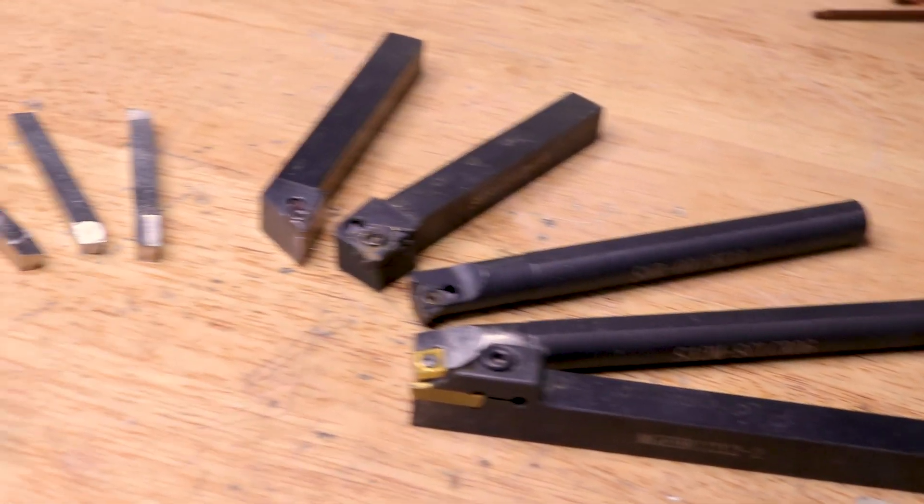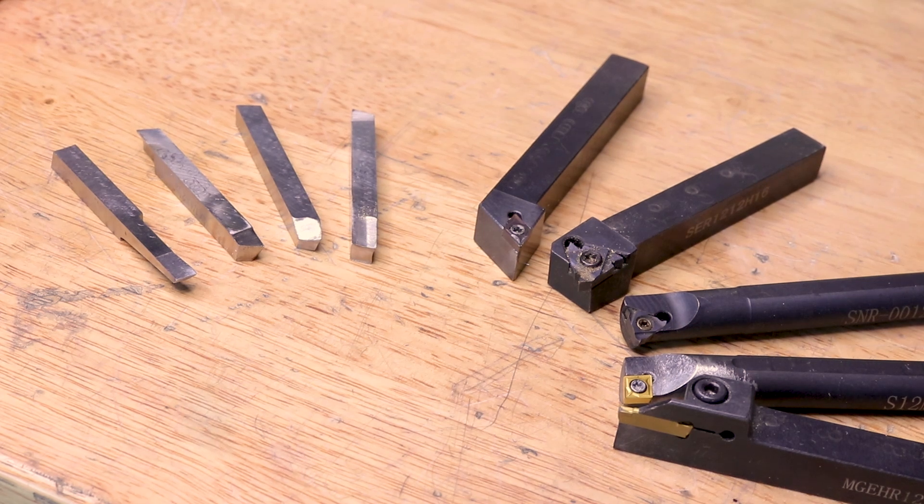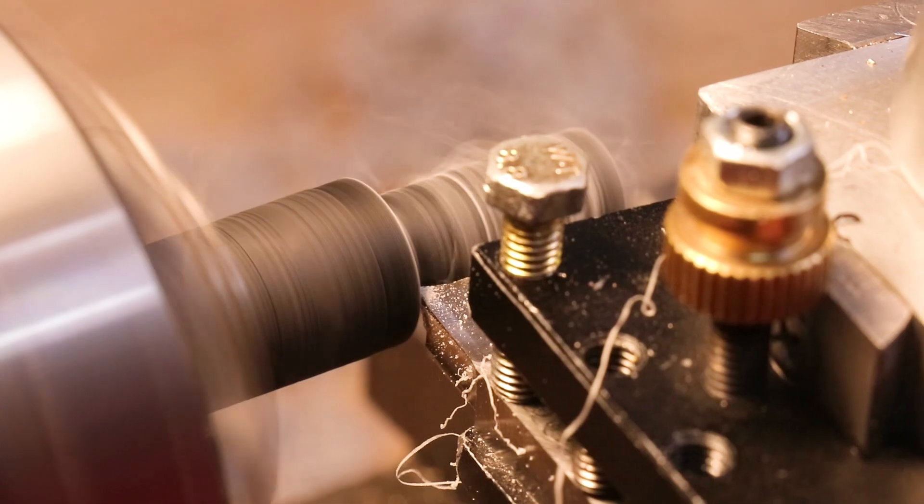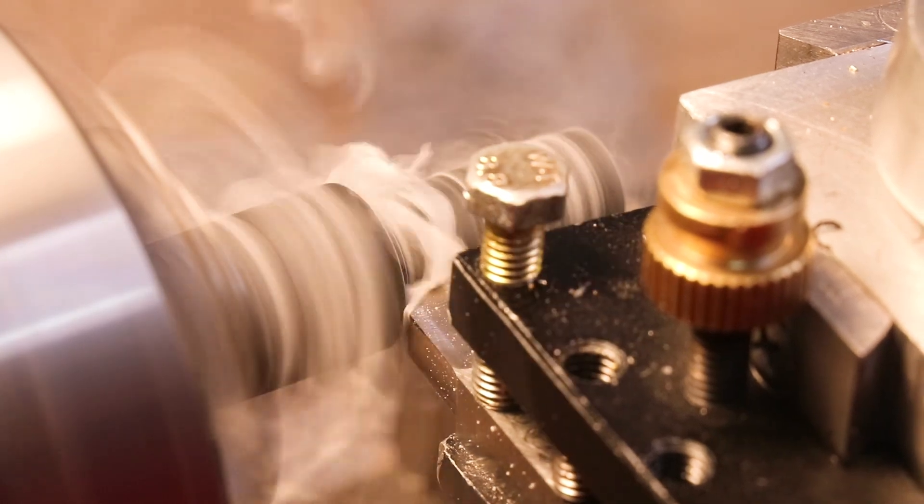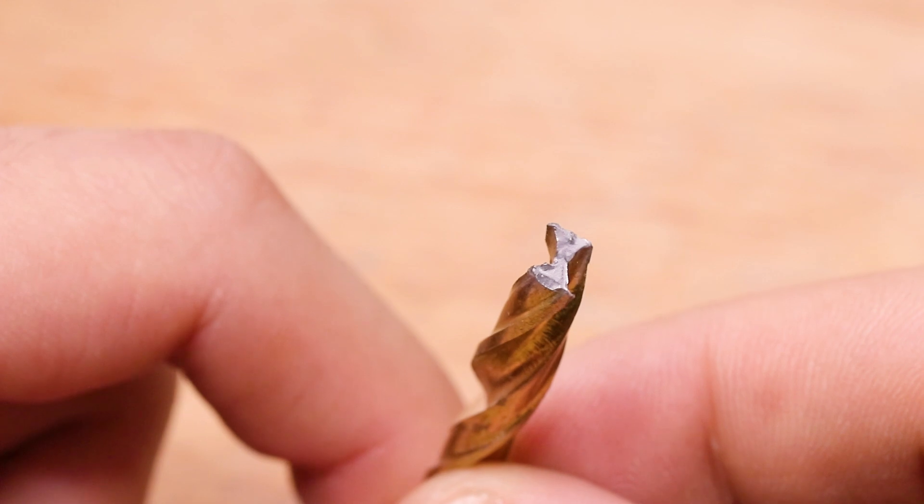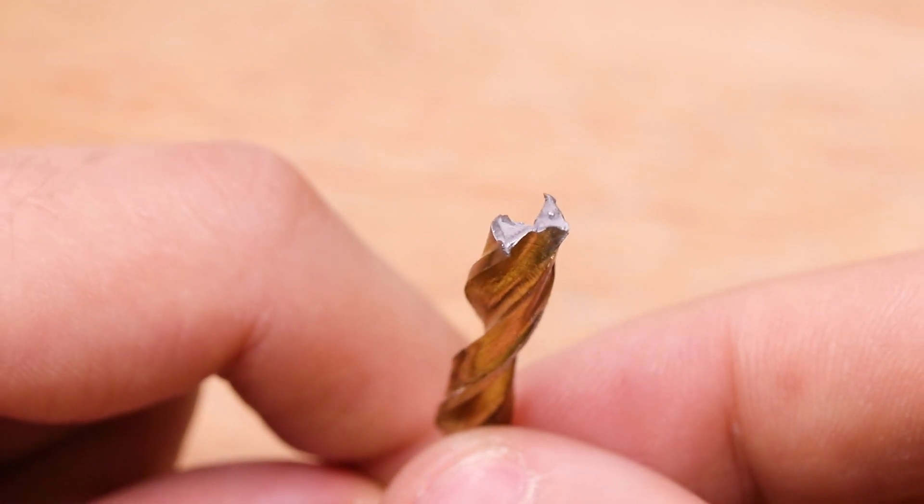Hello everyone, welcome back to the workshop. A while back I made a video outlining the characteristics of high-speed steel and carbide tools that can be used on the mini lathe, and in that video I referenced how broken twist drills can be recycled and turned into basic lathe tools, and that's what I want to talk about in this video.